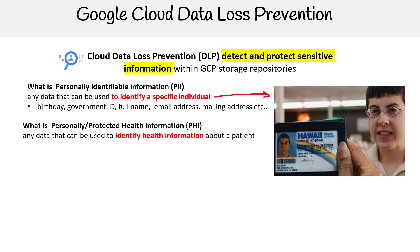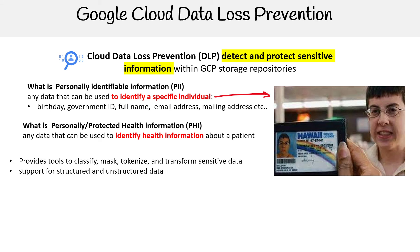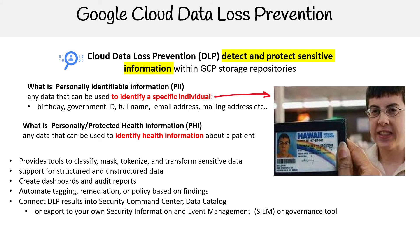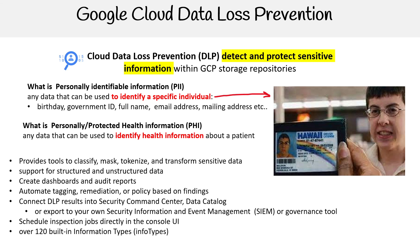Some of the features of DLP: it provides tools to classify, mask, tokenize, and transfer sensitive data; support for structured and unstructured data; create dashboards and reports; automate tagging, remediation, and policy-based findings; connect DLP results into the Security Command Center data catalog, or export to your own SIEM or governance tool; schedule inspection jobs directly in the console UI; over 120 built-in information types. Info types define what sensitive information can be scanned.